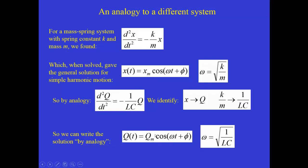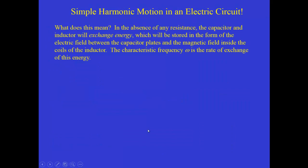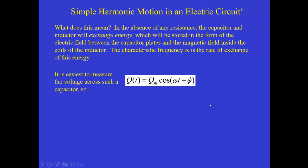Because if you just look at this equation, this implies that Q, because of the cosine term, goes from maximum down to zero, back to maximum down to zero over and over again, just like the cosine function does. So if there were no resistance, this process would go on forever. And the characteristic frequency omega is the rate of exchange of that energy.